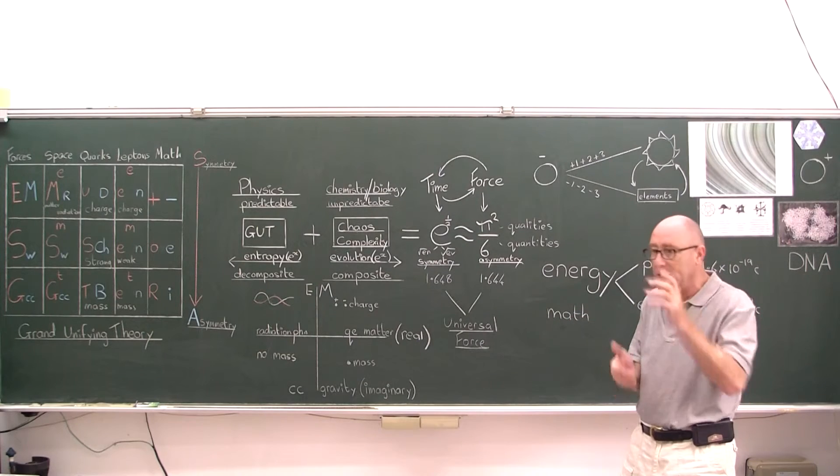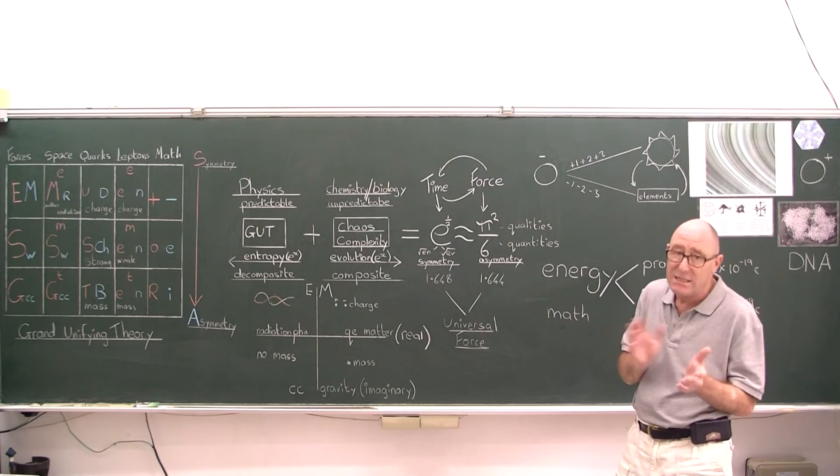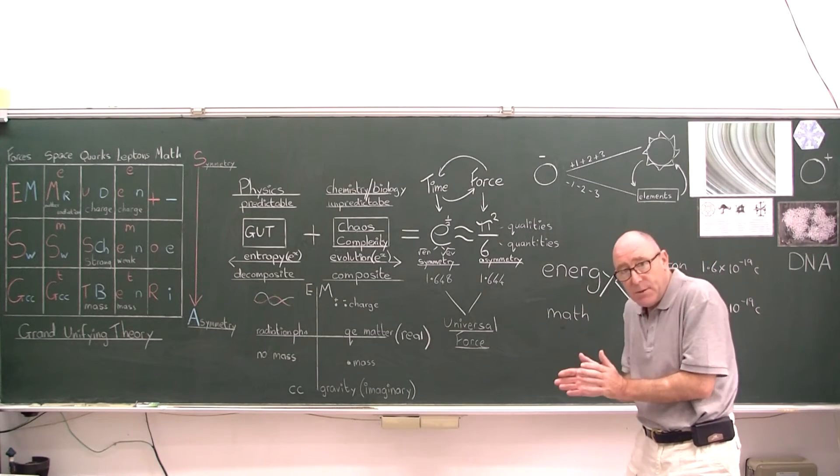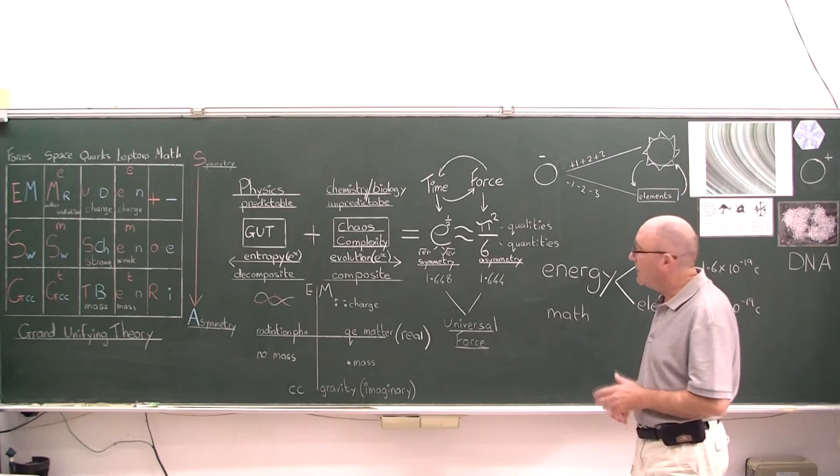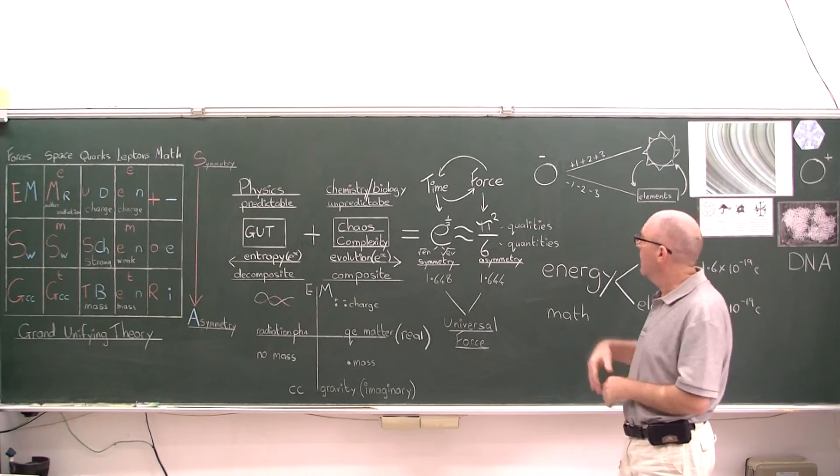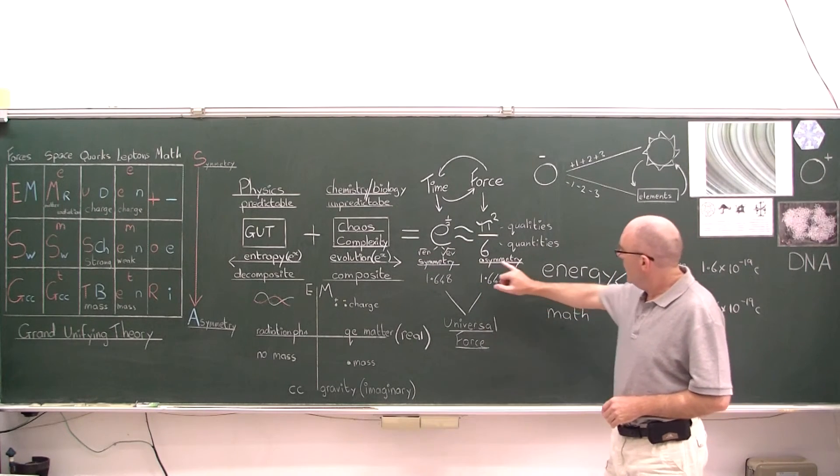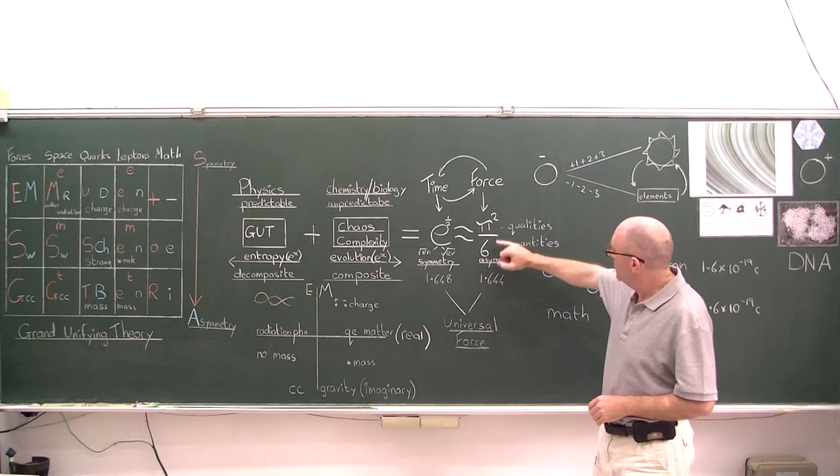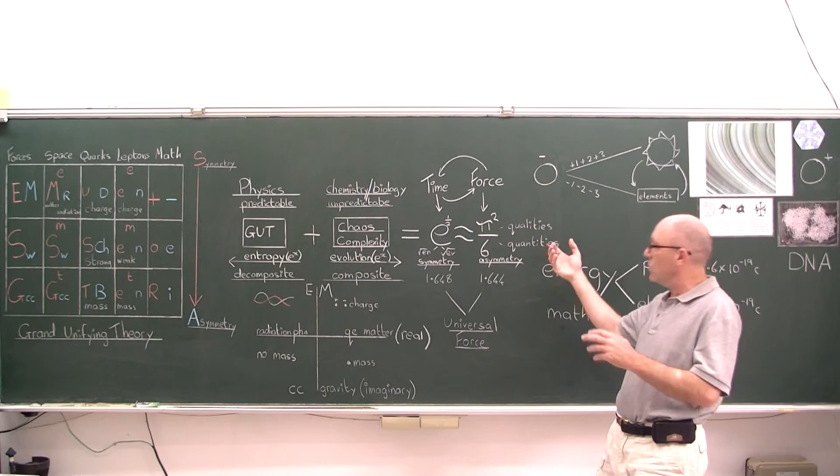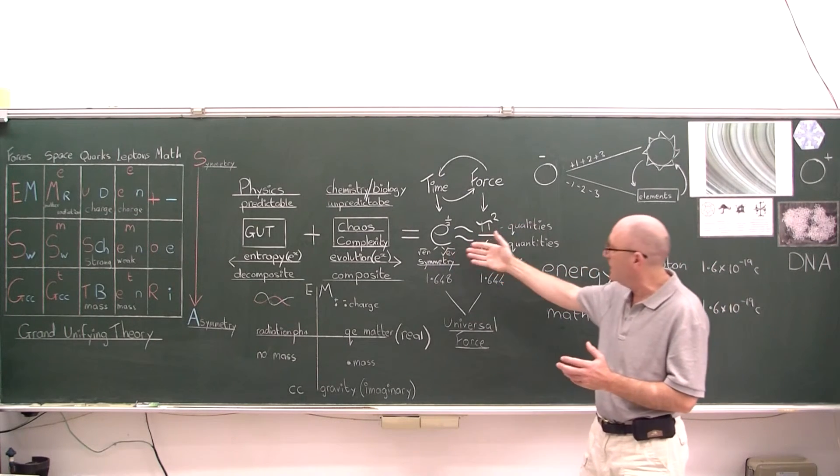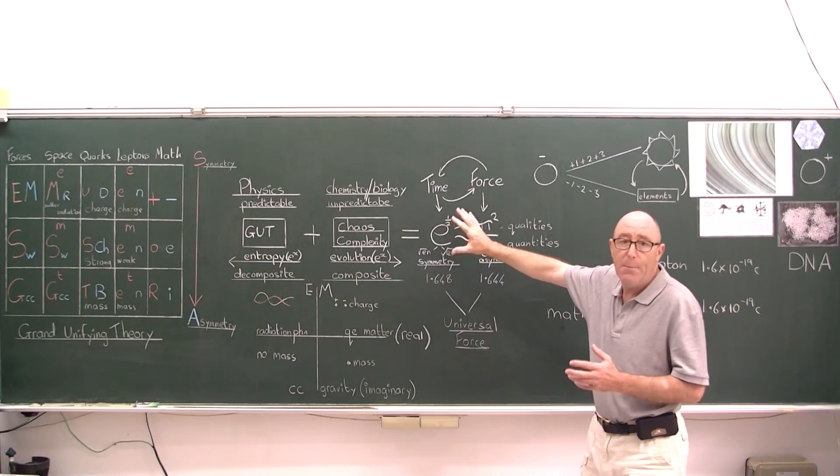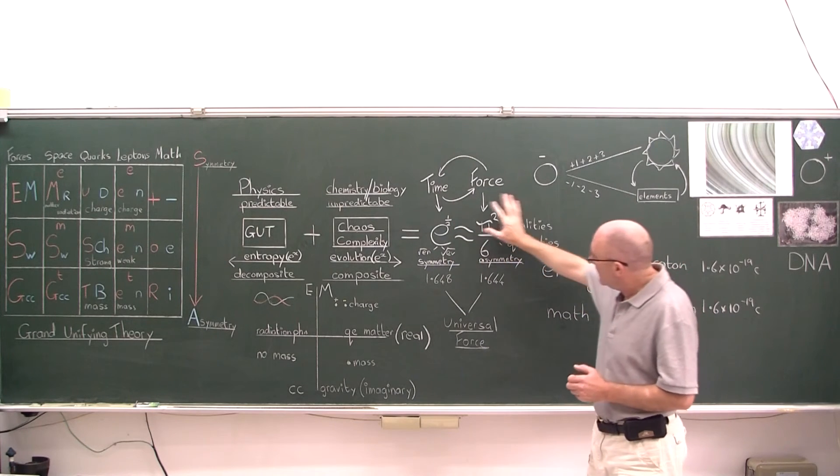And now I can tell you what left and right, up and down, top and bottom are. They're mathematical vectors in three dimensional space. Now it's beginning to make sense. So this expression here, the asymmetry between space and matter causes gravity, causes change, causes events, causes things to build themselves. That now makes sense.